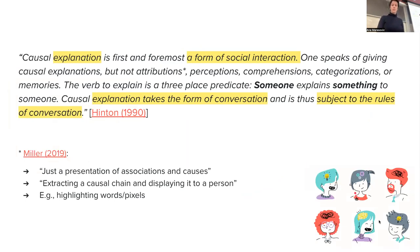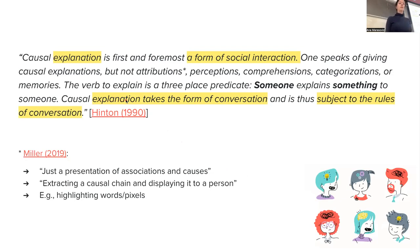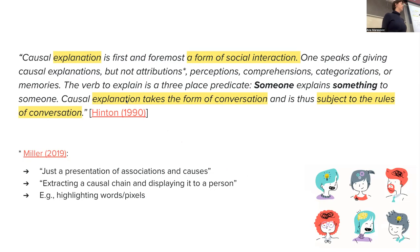Let's start with perspectives from psychology. Here I have a snippet from a wonderful paper by Hinton from the nineties, where he discussed how people explain things between each other. So this is still about human-to-human ways of explaining. He says 'causal explanation' — by causal explanation he means types of explanations we have talked about in the first part of the course, something where you point to causes for the model prediction.